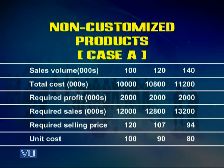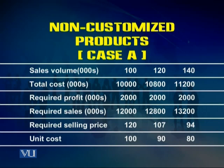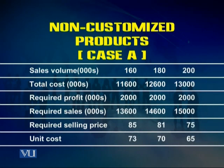The unit cost can be arrived at by dividing total cost by the sales volume. We can see that in order to earn the 2 million profit set as a target, the selling price at a volume of 100,000 would need to be 120. As the price goes down to 107, the sales volume will need to be 120,000. It can go down to 94 where the sales volume required would be 140,000. At a required selling price of 85, they will need to sell 160,000 volume to generate the 2 million profit.